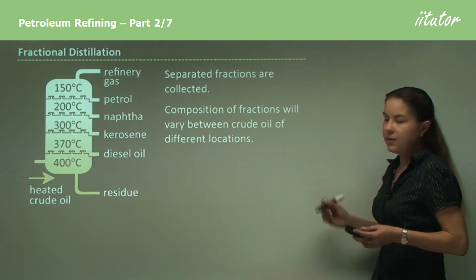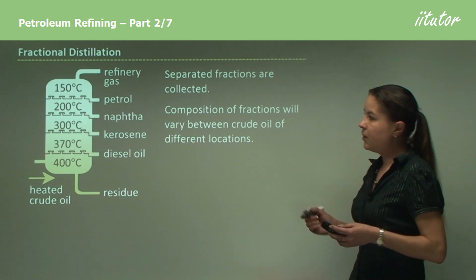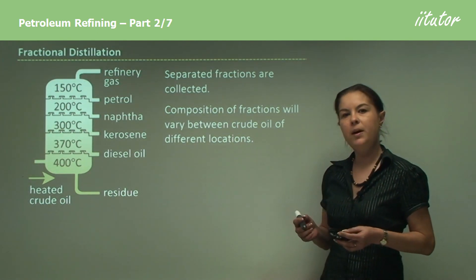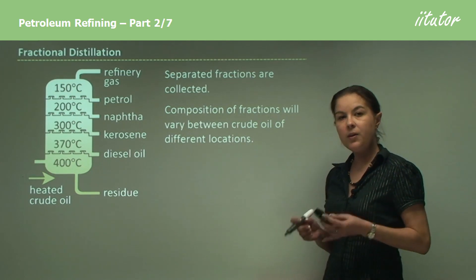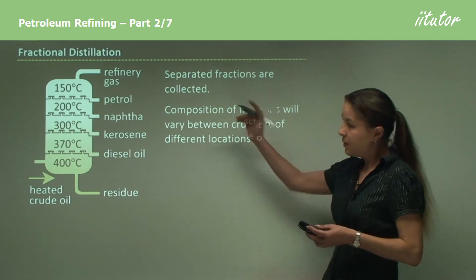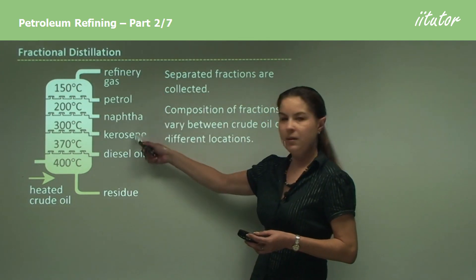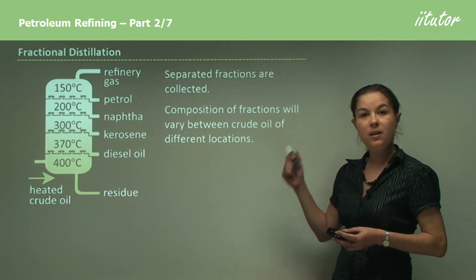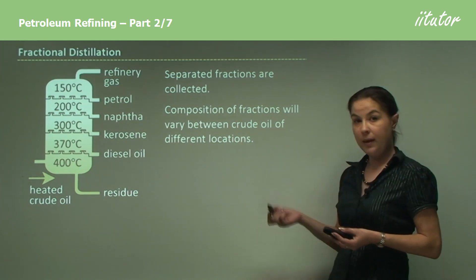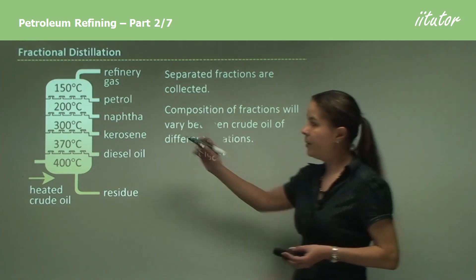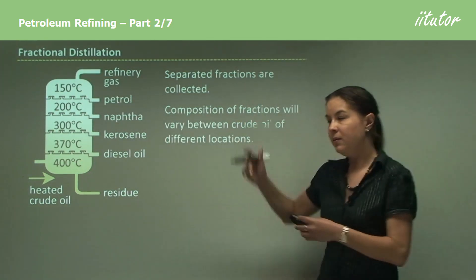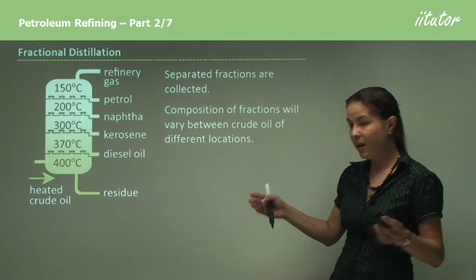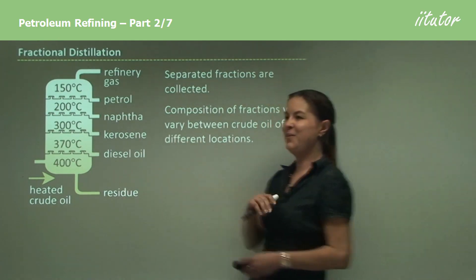That now sums up our theory part of this section. Today's lesson was mostly about refining petroleum and the use of fractional distillation to separate different products from one crude oil product. The way we do this is by using the physical property of boiling point. Try to remember that the smaller the chain, the higher up the column and the lower the boiling point; the longer the hydrocarbon, the lower down and the higher the boiling point.